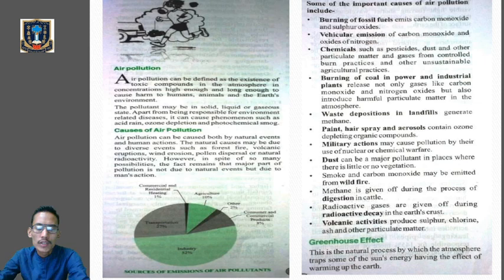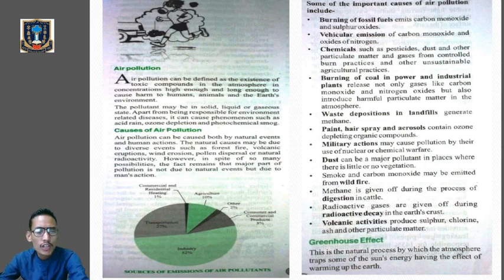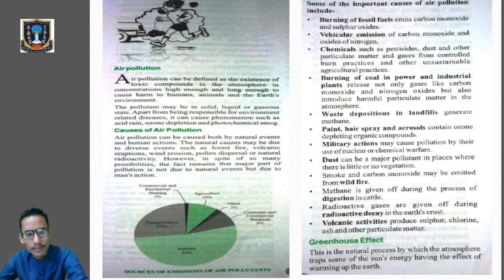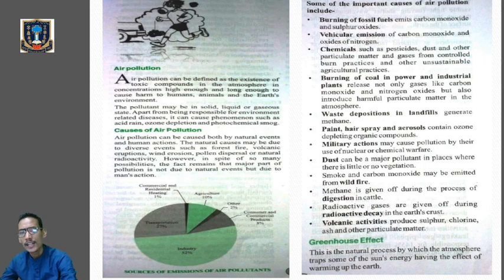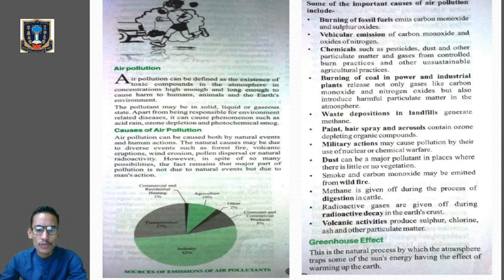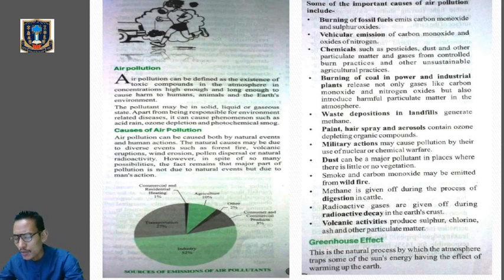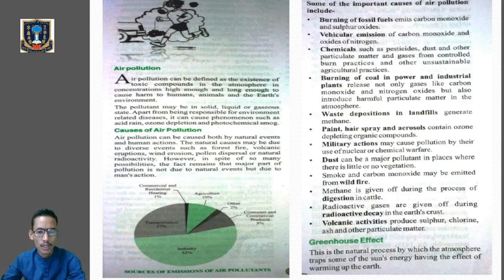The pollutants — those agents which pollute the air — may be in solid, liquid, or gaseous form. Apart from being responsible for environment-related diseases, air pollution can cause phenomena such as acid rain, ozone depletion, and photochemical smoke. So air pollution not only affects the health of living organisms but is also responsible for acid rain, ozone layer depletion, and photochemical smog.